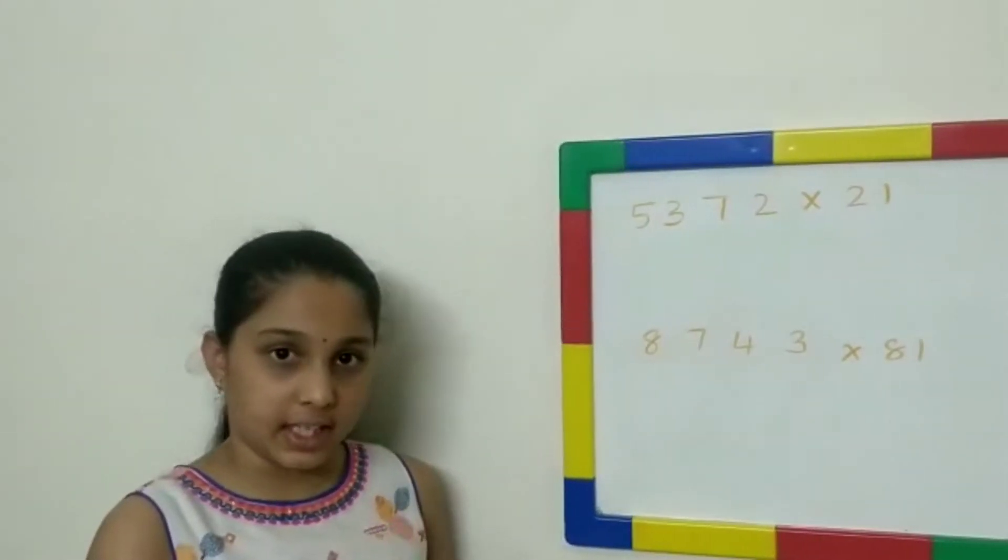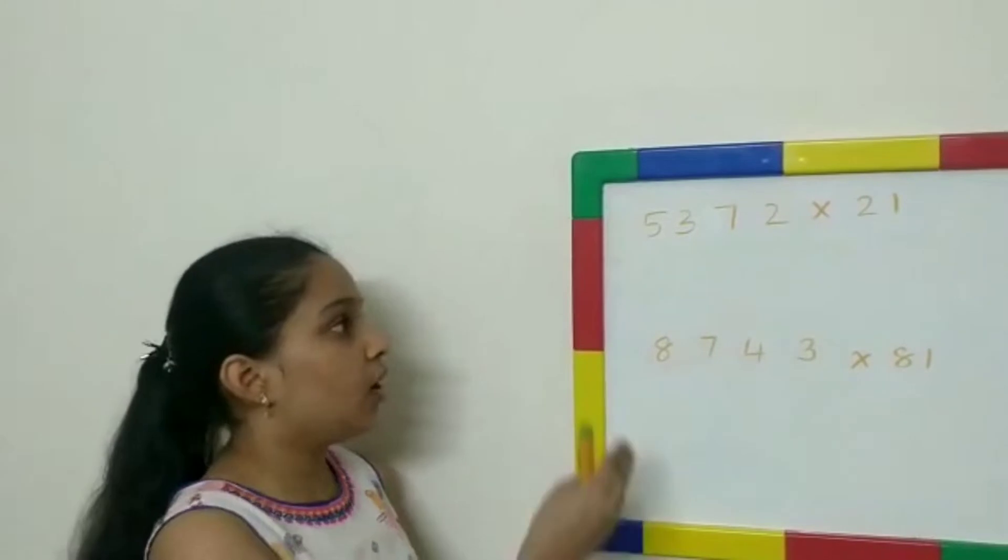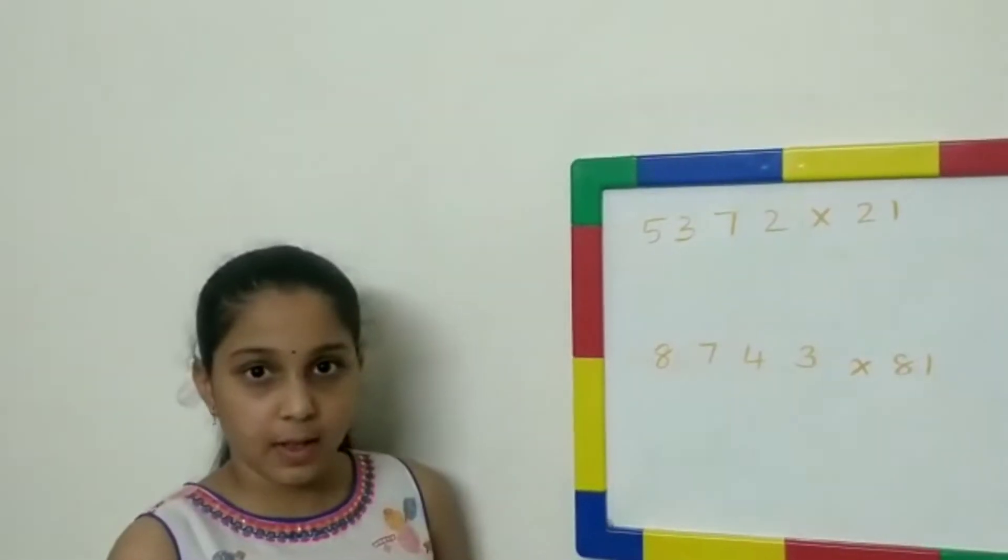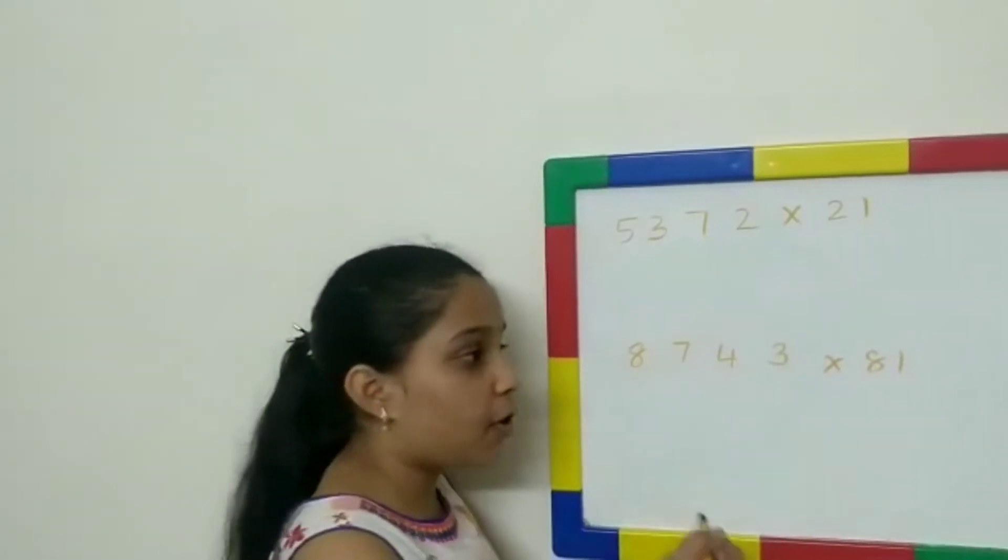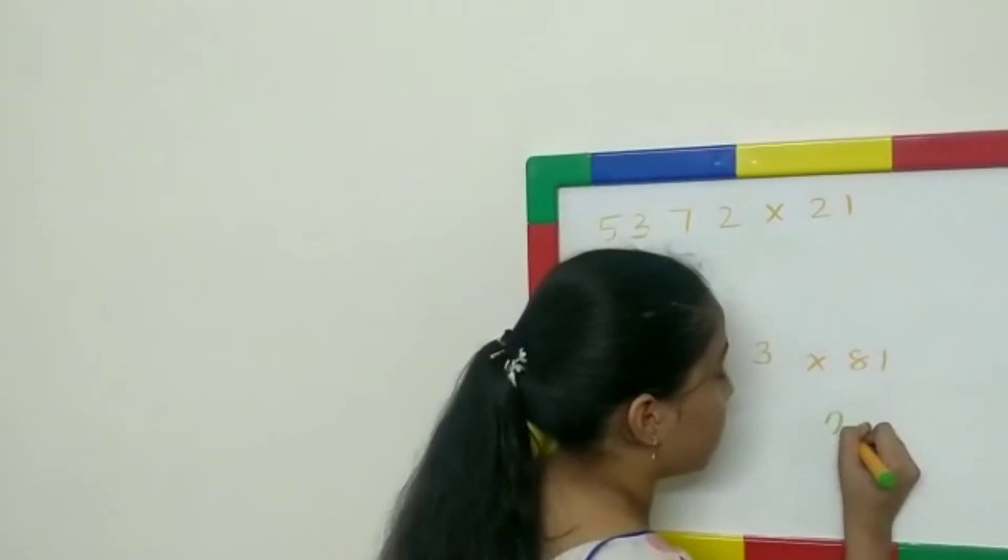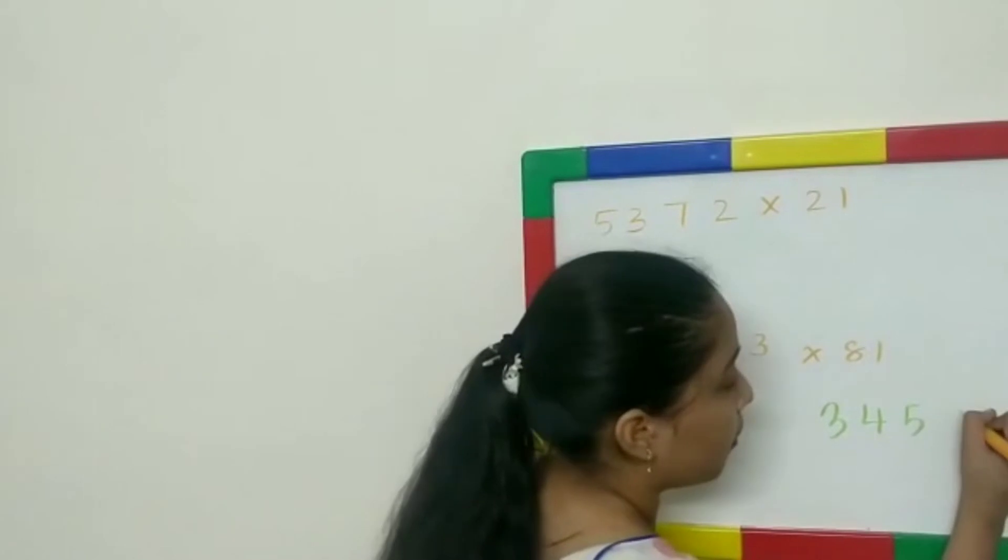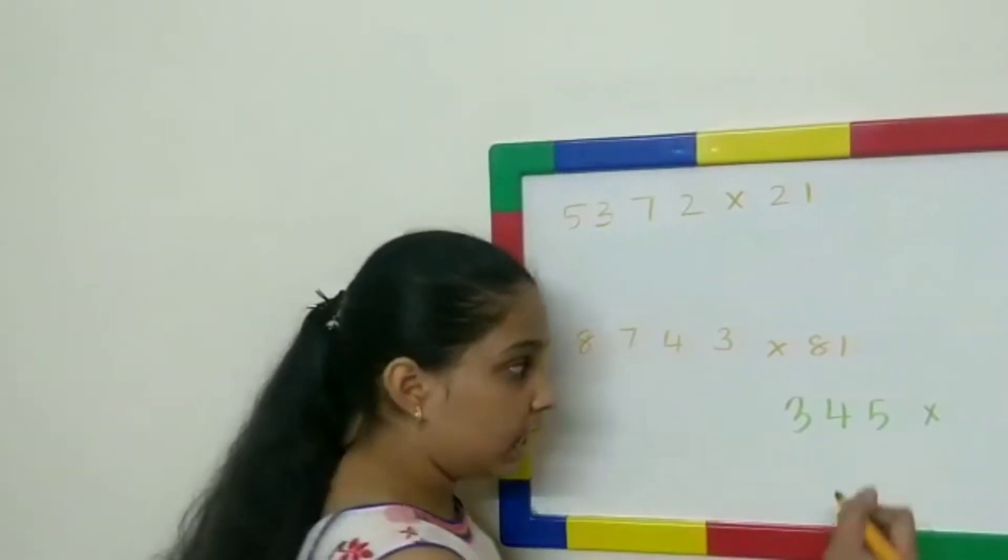First, I'll take you through an example, then we'll subsequently solve these. For example, we'll take three-digit number 345 multiplied by the number 11.